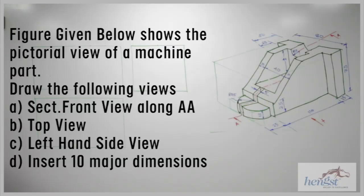The figure given below shows the pictorial view of an object. Draw the full scale to the following views: A. Sectional front view along AA. B. Top view. C. Left-hand side view. Insert 10 major dimensions.